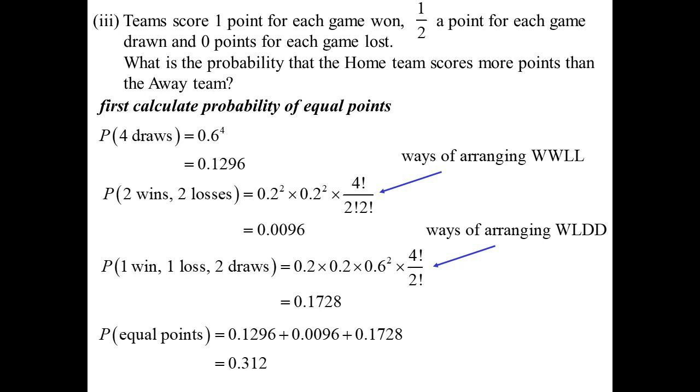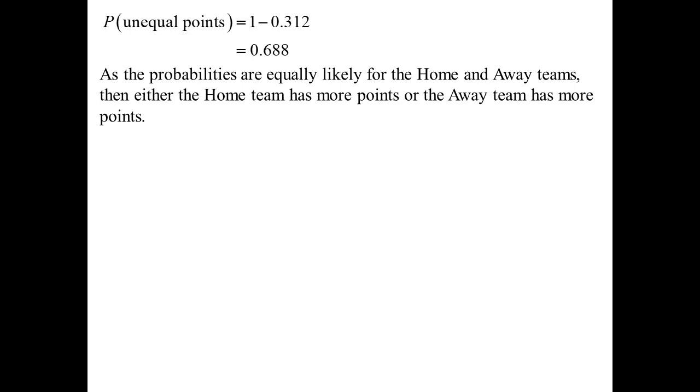So that's the probability that the two teams get equal points. Therefore, the probability that they get unequal points must be one less than that. But remember, everything's equally likely. Therefore, the home team scoring more than the away team must be half of the unequal points. And we get 0.344.